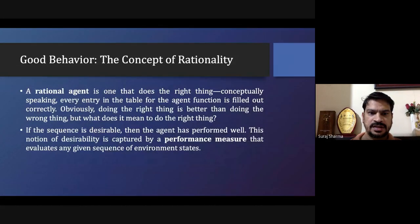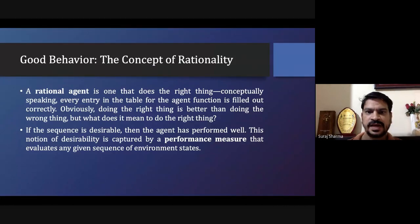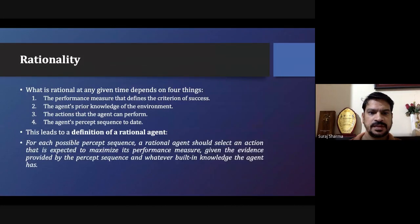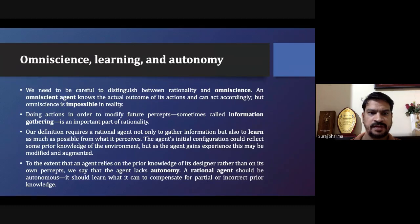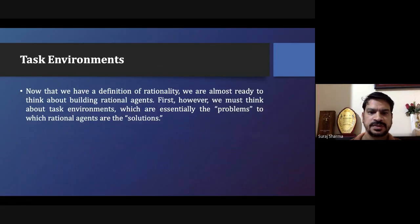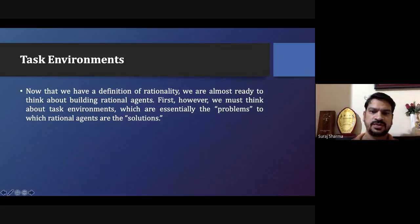Rational behavior is close to the ideal behavior of any agent. About rationality, we have an omniscient agent, a learning agent, and an autonomy agent. The task environment is where the agent actually works — problems are present in the task environment and the agent looks for solutions within that particular problem.